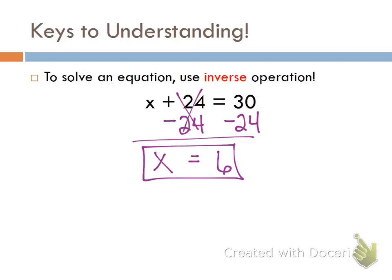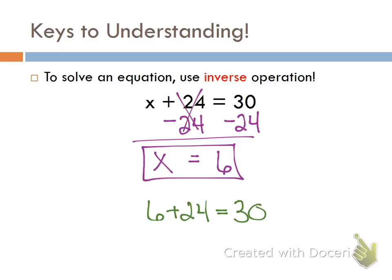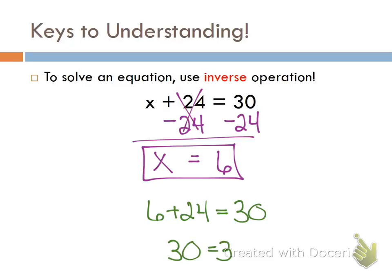We're not done yet, because our directions on the homework tonight say to check your solution. I take what I think is the value for x and plug it back into the original equation. Is it true that 6 plus 24 equals 30? What is 6 plus 24? 30 equals 30 — it checks out. Box in the checked answer. On your homework tonight you will have two boxed answers: one is the answer, the other is the checked answer.